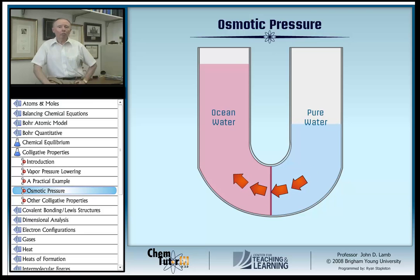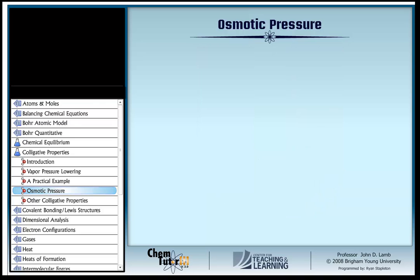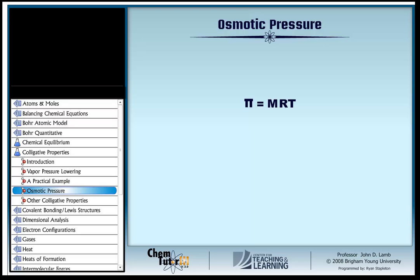If you carry out this experiment in a U-shaped tube, the water column on the sea water side will rise due to this pressure, and it will keep rising until the force of gravity stops it. There's a formula to predict this osmotic pressure, and it can actually be derived from the ideal gas equation. Rearranging the ideal gas equation so pressure is alone on one side, we get n/V on the right — which for a liquid solution is the molar concentration. Substituting molar concentration for n/V, the pressure becomes the osmotic pressure, symbolized with the Greek letter pi.